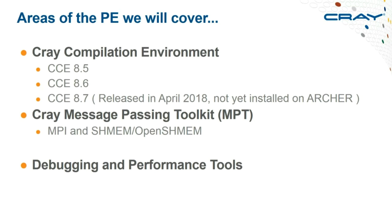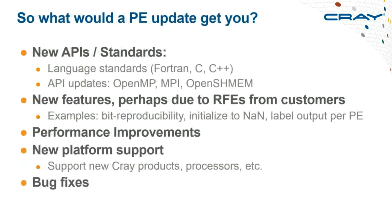I'll cover changes in compilers, MPI optimizations, and debugging and performance tools. The webinar will be available online and I'm happy to send a PDF to Archer users who contact the help desk, since there's a lot of reference-type information useful to dip into later. The key question is: why should you care about a new programming environment update? What might it get you?